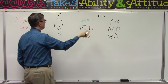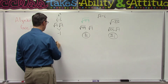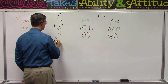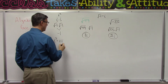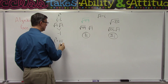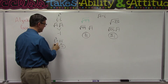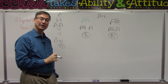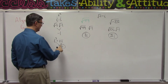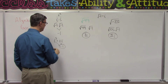Think about what i to the third power means: i times i times i. These two come together and become negative 1, and then we keep the i. So i to the third would be negative i.